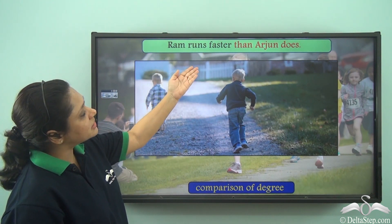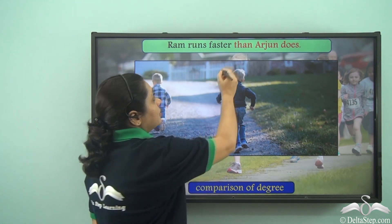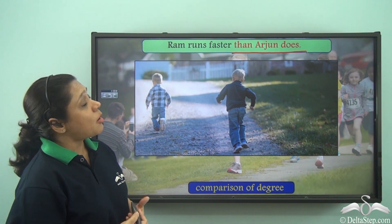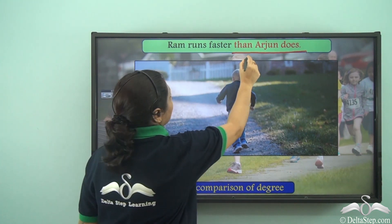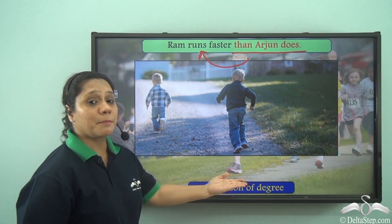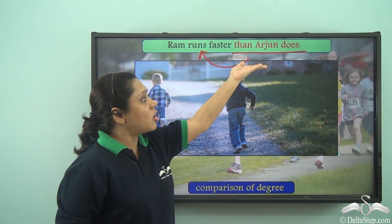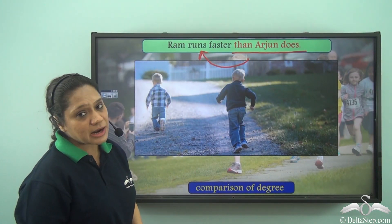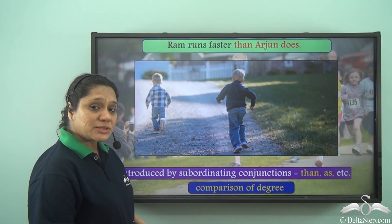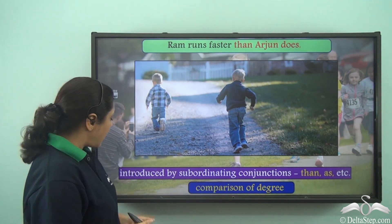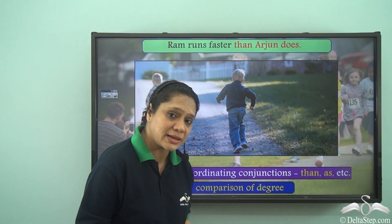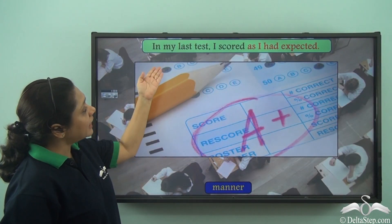'Ram runs faster than Arjun does.' The clause 'than Arjun does' is working like an adverb, describing the verb 'runs.' It shows a comparison of degree, so 'than Arjun does' is an adverb clause of comparison of degree. Adverb clauses showing comparison of degree can be introduced by subordinating conjunctions like than, as, etc.